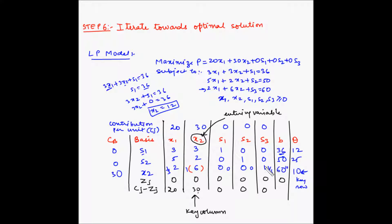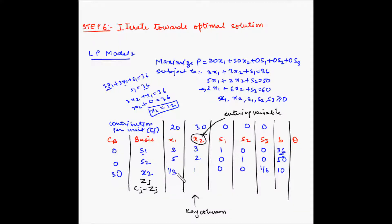So let me replace this row with the new numbers. I have replaced this row with the new numbers that we had found. I have also removed the values of Zj and Cj minus Zj because now we are obtaining a new solution and will have to recalculate these numbers. I have also removed the values of theta because we will have to calculate later on if required.